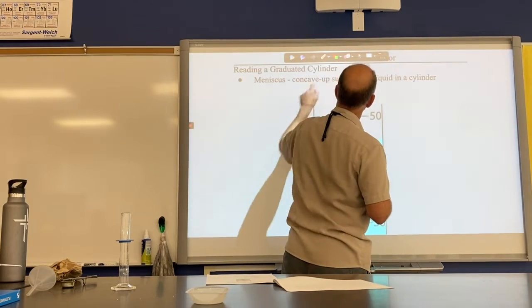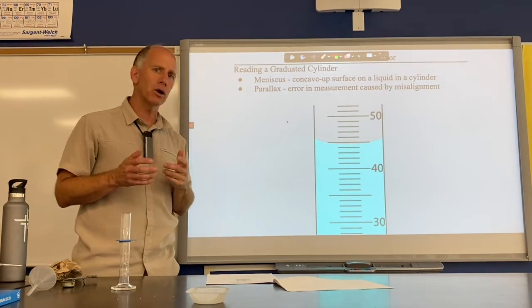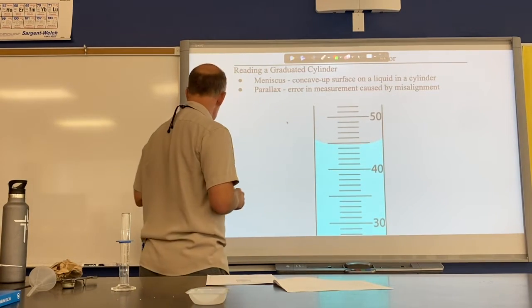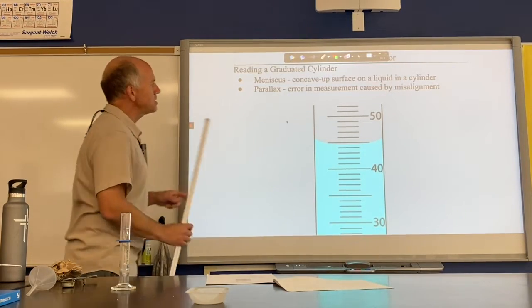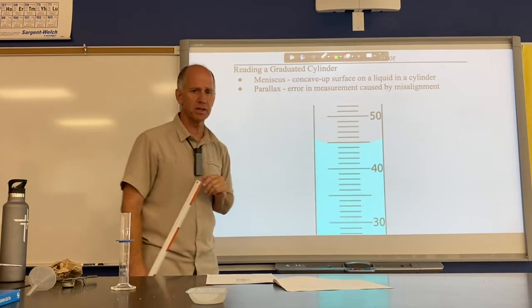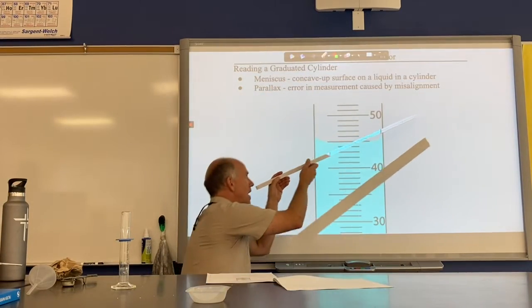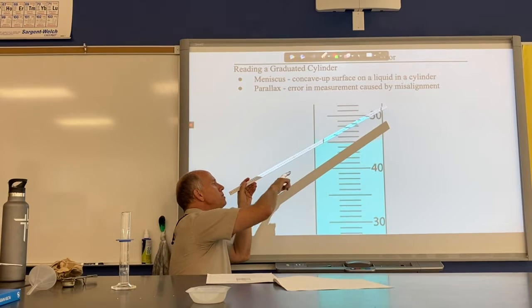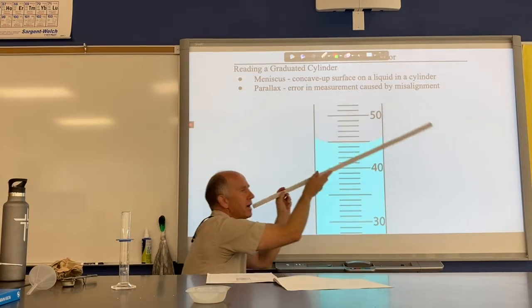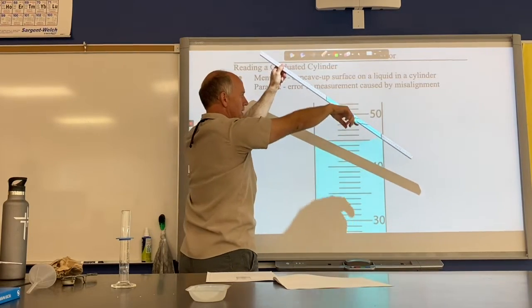In addition to the meniscus, there's another important term: parallax. Parallax is error in measurement caused by misalignment. If you're looking from below, you'll think the volume is greater than it is because you're reading low to high. If you're above, you'll read high to low and get a different error. So you need to account for parallax when measuring.